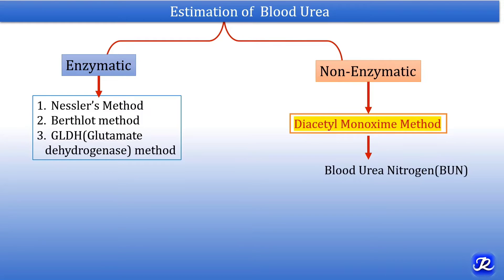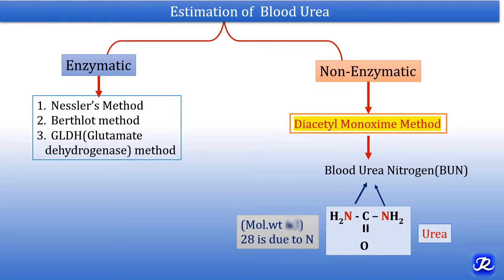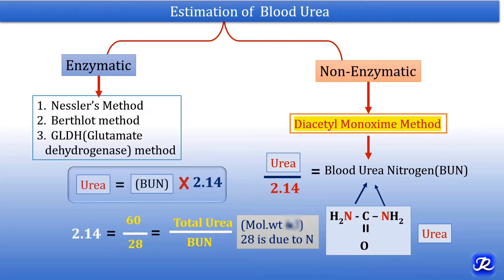By this method we can find out blood urea nitrogen, also called BUN. The structure of urea contains two nitrogen atoms — these are the blood urea nitrogen. The molecular weight of urea is 60, and 28 of that molecular weight is due to these two nitrogen atoms. So the ratio of total urea to BUN is 60 divided by 28, which equals 2.14. Therefore, BUN equals urea divided by 2.14, and urea equals BUN multiplied by 2.14. We will first estimate BUN and then multiply by 2.14 to calculate the concentration of urea.